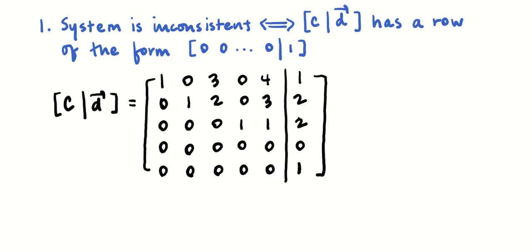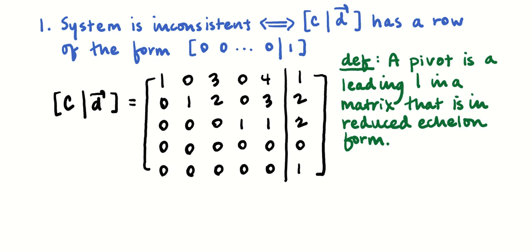I'm going to talk about these leading ones for a second. We're going to be talking about them frequently enough that I'll give them a name — we're going to call them pivots. A pivot is a leading one: when we look at a row, the first number we see is a one, and it's going to be a leading one in a matrix that's in reduced echelon form. I'll identify the pivots: right here, right here, and right there.